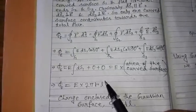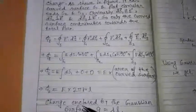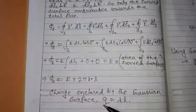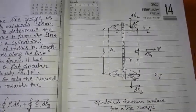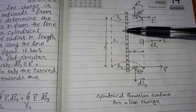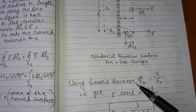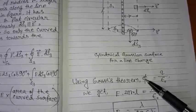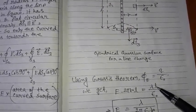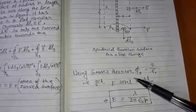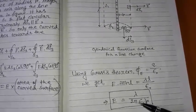The charge enclosed by the cylindrical Gaussian surface is q_in equal to λl, where λ is the line charge density and l is the total length. Using Gauss's theorem, φ_E equal to q by ε₀, we substitute: E times 2πrl equal to λl by ε₀. Solving this gives E equal to λ by 2πε₀r, which is the electric field at a distance r from an infinitely long uniformly charged wire.